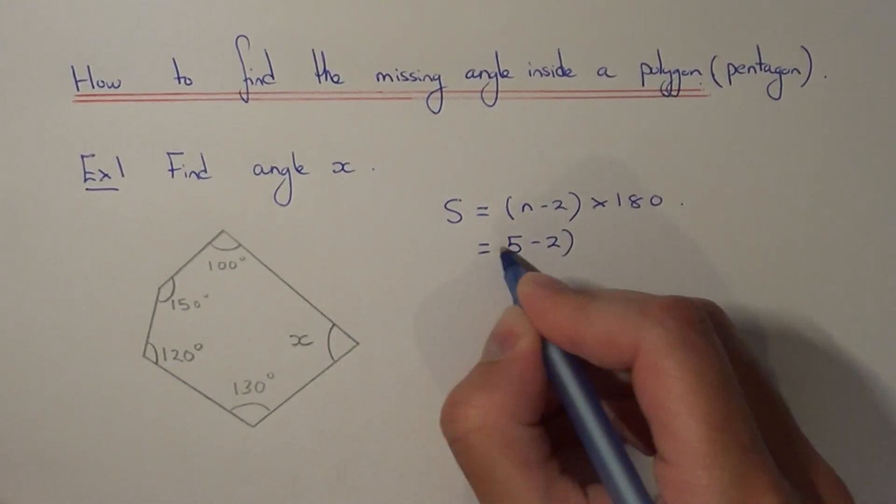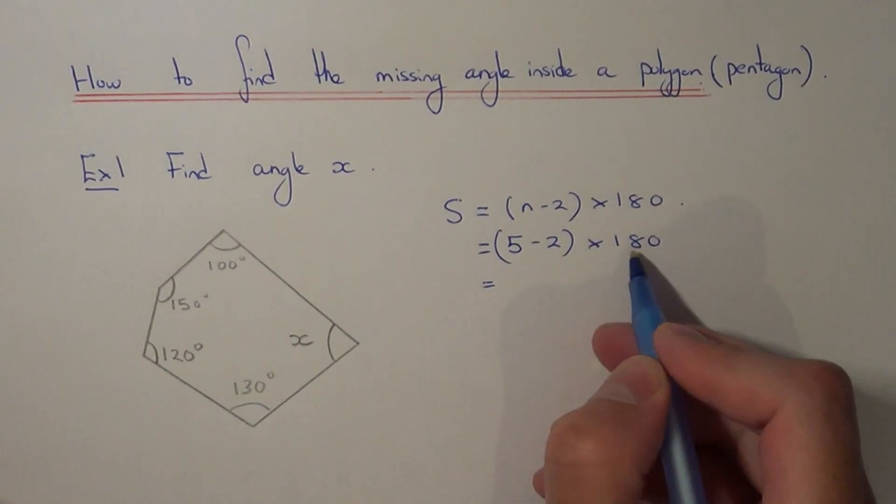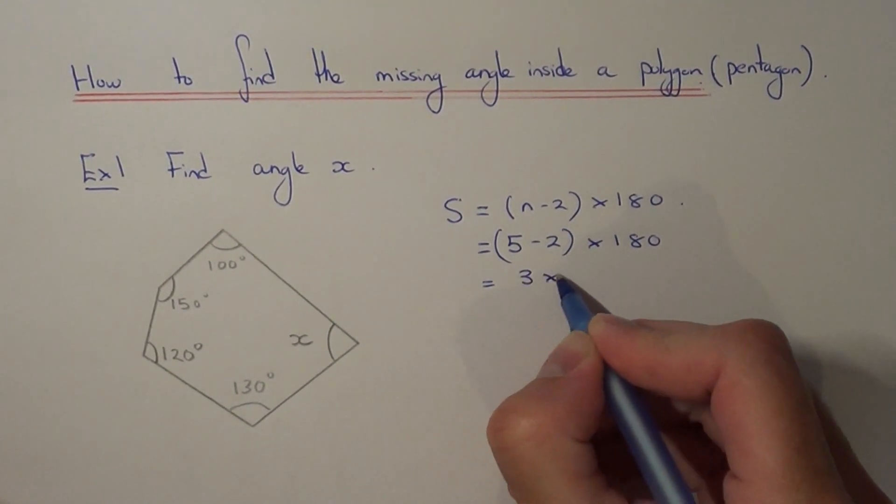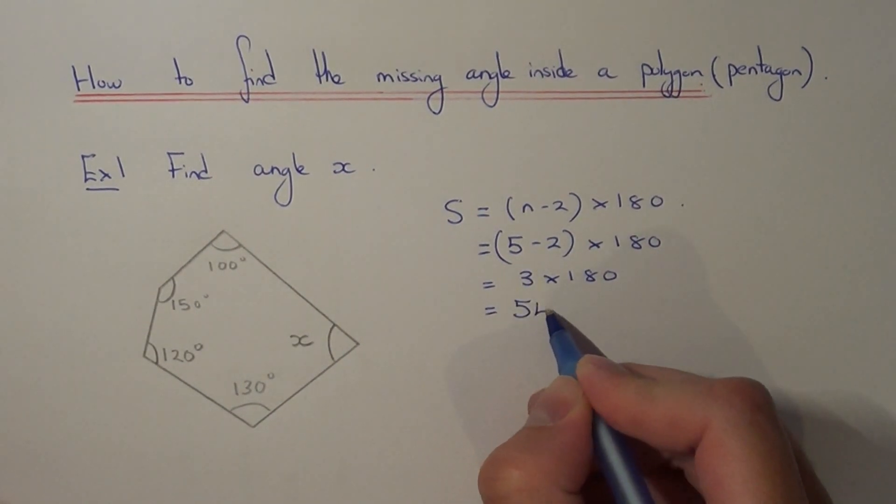So we do five take away two times 180. So five take away two is three, so three times 180 gives us an answer of 540 degrees.